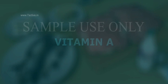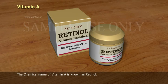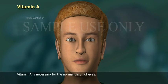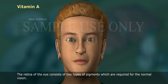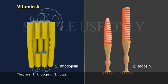Vitamin A. In our present session, let us discuss about one of the fat-soluble vitamins, i.e. Vitamin A, in detail. The chemical name of Vitamin A is known as Retinol. Vitamin A is necessary for the normal vision of eyes. The retina of the eye consists of two types of pigments which are required for normal vision: Rhodopsin and Eidopsin. Vitamin A helps in the production of those two types of pigments.